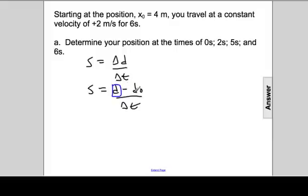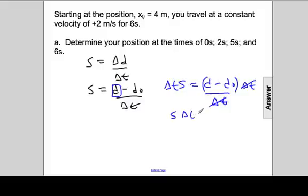D has delta t divided and d-naught subtracted. So the first thing we will do, I'll rewrite s equals d minus d-naught divided by delta t. The first thing I'm going to do is to multiply both sides by delta t. So speed times delta t will be equal to d minus d-naught, on account of the fact that the delta t's cancel.